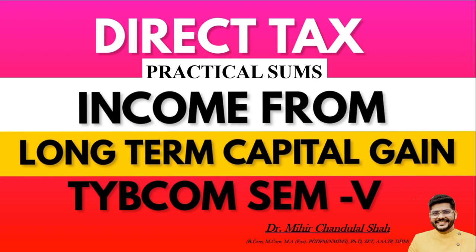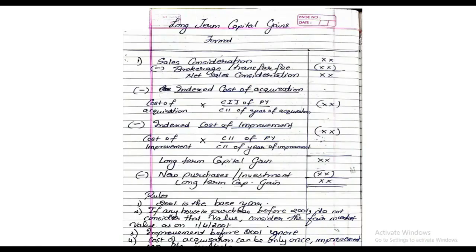So let us see how to solve this particular topic. Now this is the format for solving the sum based on long term capital gains. The sum will start with number one: sales consideration, that is the value at which you are going to sell your property in the previous year. Less brokerage or transfer fees, if any. So you minus from your sales the brokerage, and you will get an answer as net sales consideration.